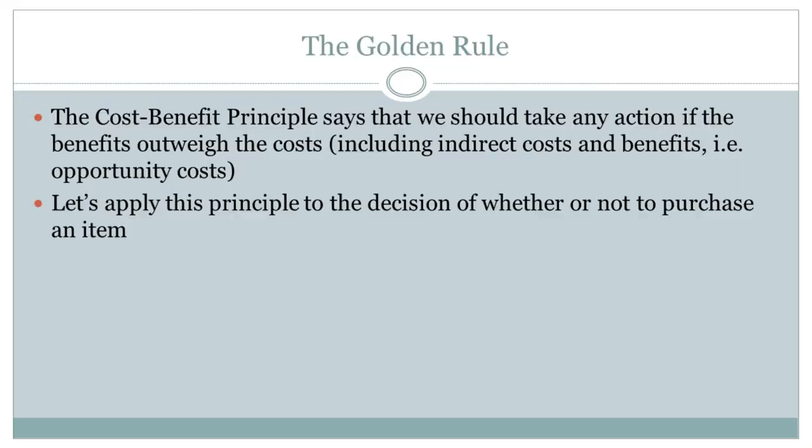Now let me at least prove to you that marginal benefit equals marginal cost should indeed be the rule. It comes from following the cost-benefit principle — take an action if the benefits most exceed the costs, including indirect costs and benefits. Let's apply this to the question of whether or not to buy something, going back to our standard example of the jalapeño. I value that jalapeño in the grocery store at $3, and it costs me 20 cents to buy — with all indirect costs and benefits already incorporated. Do the benefits outweigh the costs? Yes — $3 is more than 20 cents, so I'm going to go ahead and buy that jalapeño.